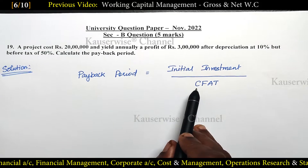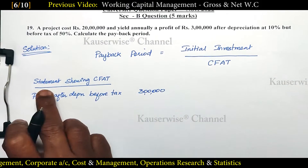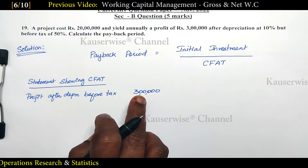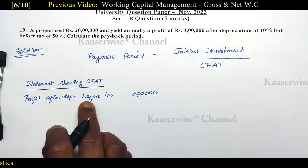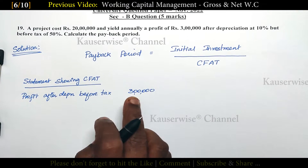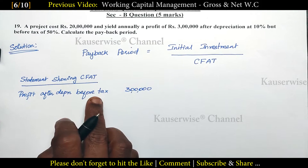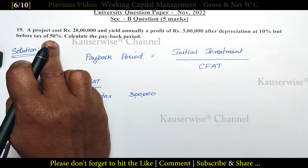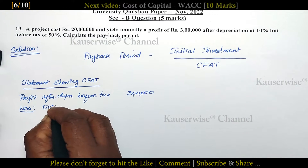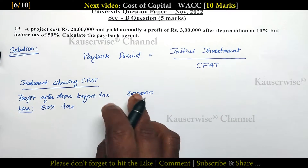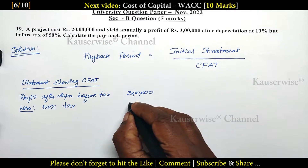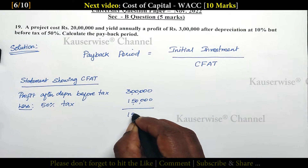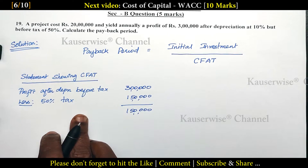Now let us see the calculation of CFAT — statement showing CFAT. The profit given in the problem is 3 lakhs: profit after depreciation but before tax is 3 lakhs. What we have to do is subtract the tax. So 50 percentage tax: 3 lakhs into 50 percentage equals 1 lakh 50,000. Balance is 1 lakh 50,000. This is profit after tax.